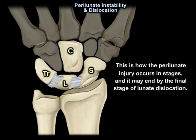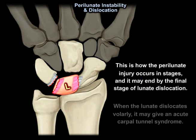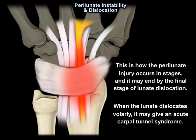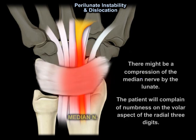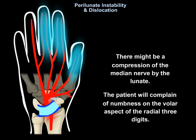This is how the perilunate injury occurs in stages, and it may end with the final stage of lunate dislocation. When the lunate dislocates volarly, it may cause acute carpal tunnel syndrome due to compression of the median nerve. The patient will complain of numbness on the volar aspect of the radial three digits.